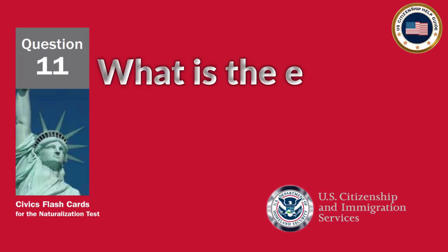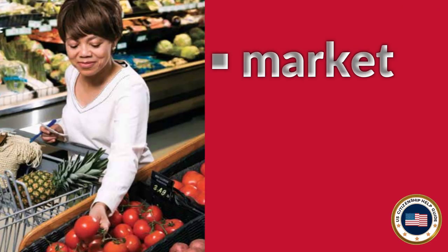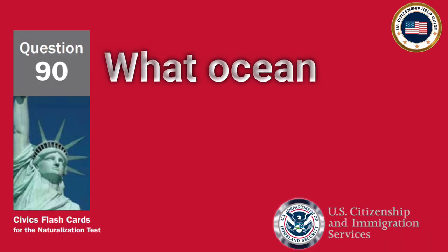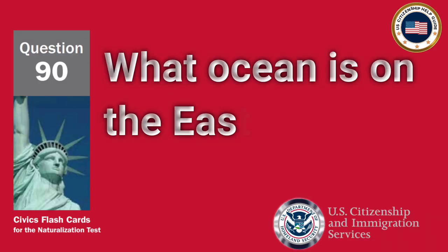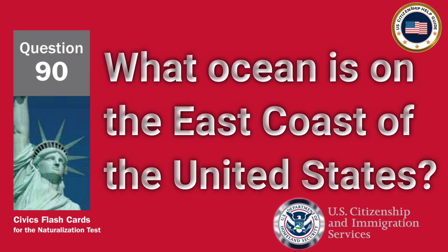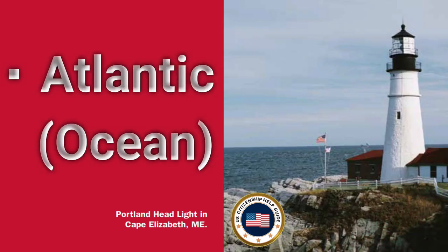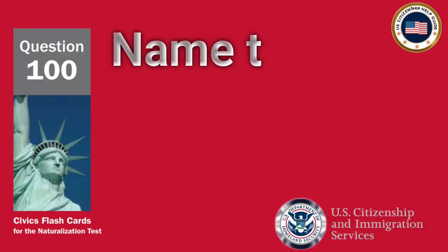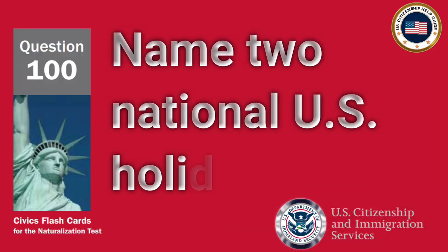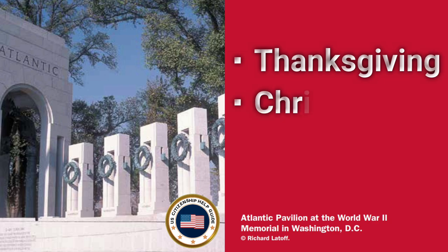What is the economic system in the United States? Market economy. What ocean is on the east coast of the United States? Atlantic Ocean. Name two national U.S. holidays. Thanksgiving and Christmas.